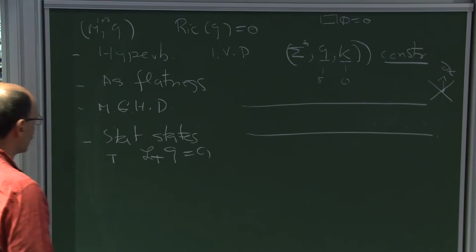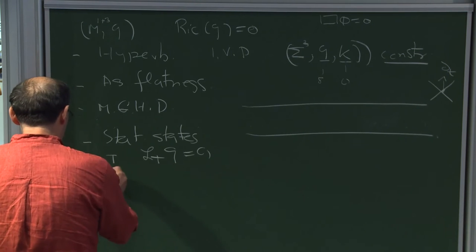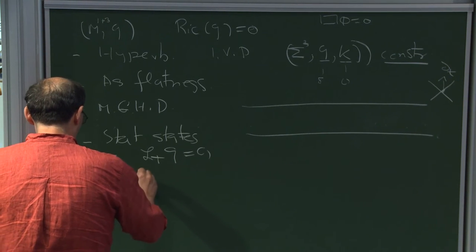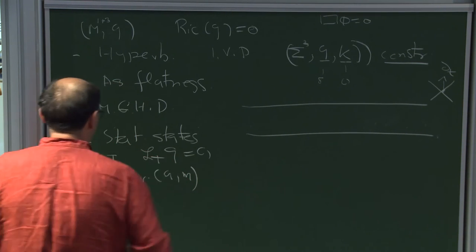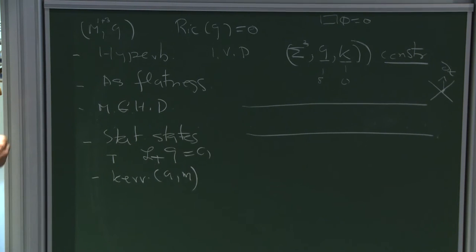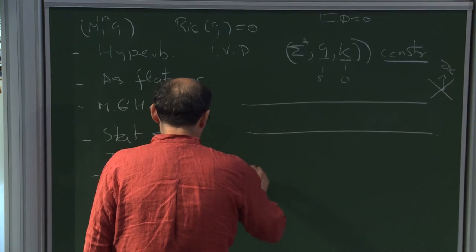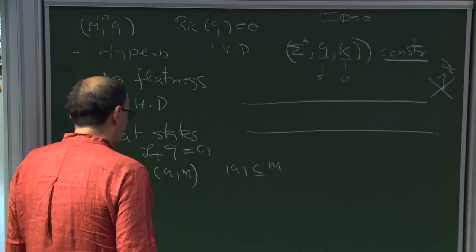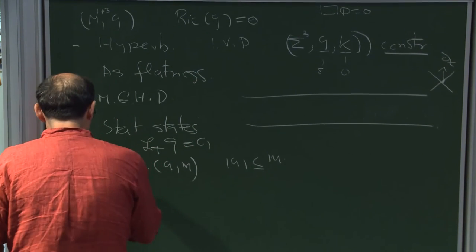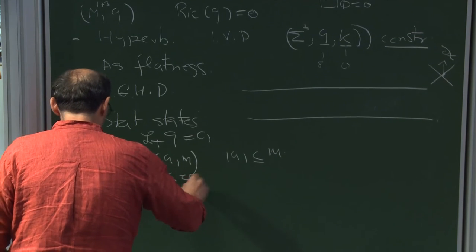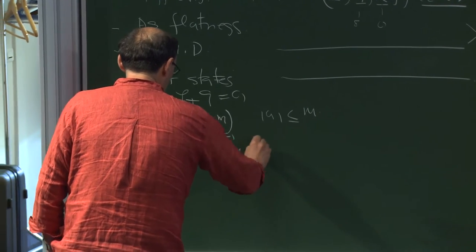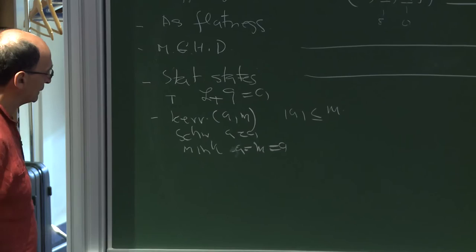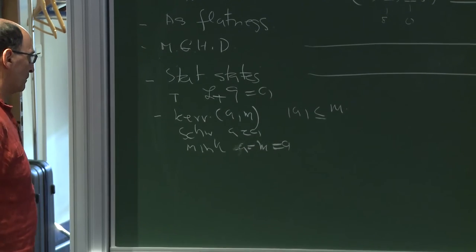There is this incredible family of solutions of the Einstein equations under the asymptotically flat assumption: the Kerr solutions, parametrized by mass M and spin parameter A, where |A| < M. The case A equal to zero corresponds to Schwarzschild, and both A and M equal to zero gives Minkowski space. These are the stationary states.